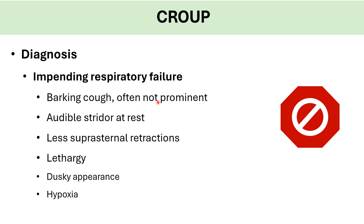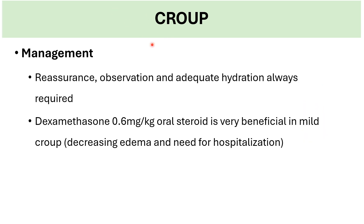In severe croup, the barking cough is often not prominent because the child is already tired. Audible stridor at rest may be less prominent. Suprasternal retractions decrease because the child is too tired to breathe — this is impending respiratory failure. Signs include lethargy, dusky appearance, cyanosis, and hypoxia. A child with croup and low oxygen must be admitted immediately.